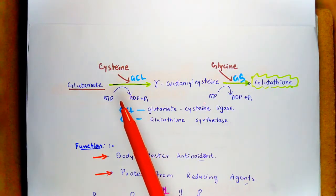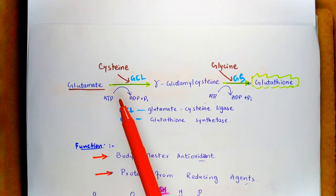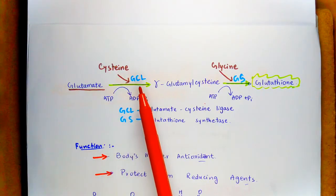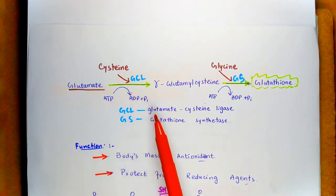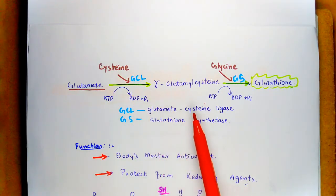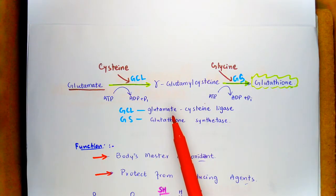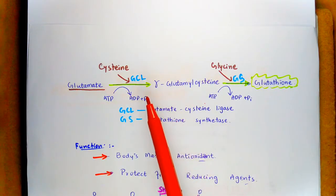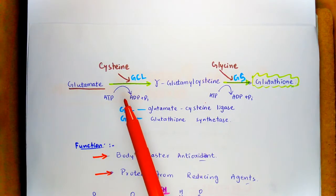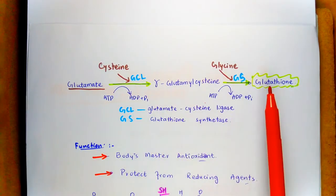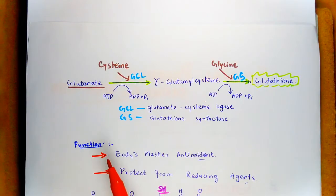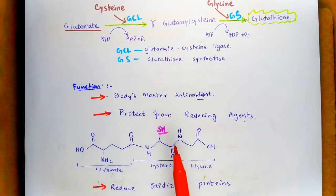The first reaction, catalyzed by glutamate cysteine ligase, is the rate-limiting step of the glutathione synthesis.